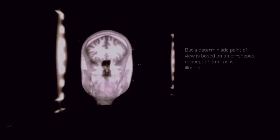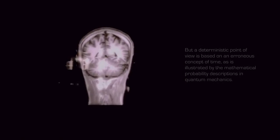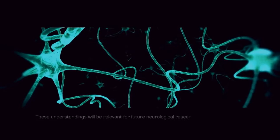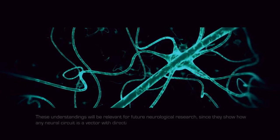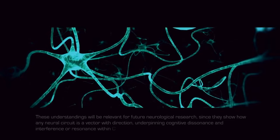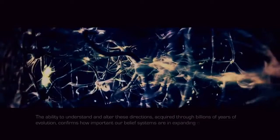These understandings will be relevant for future neurological research, since they show how any neural circuit is a vector with direction, underpinning cognitive dissonance and interference or resonance within C. The ability to understand and consciously alter these directions, acquired through billions of years of evolution, confirms how important our belief systems are in expanding our awareness, and how they affect our working memory, which is responsible for the extent to which we can make connections, and for the neural processes that create meaning.